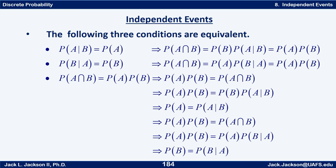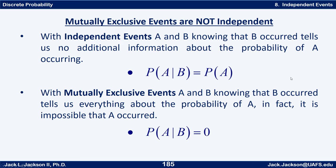Any one of these can be considered the definition of independent events because they are all equivalent — they all basically mean the same thing. With independent events, if A and B are independent, knowing that B occurred tells us no additional information about the probability of A occurring. The probability of A given B is still just the same as the probability of A — that extra information does not change it.